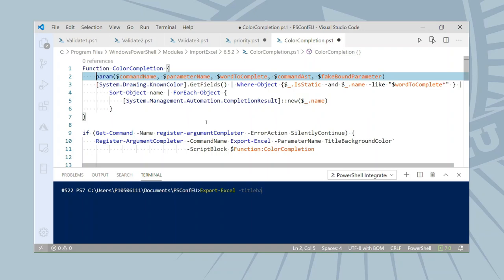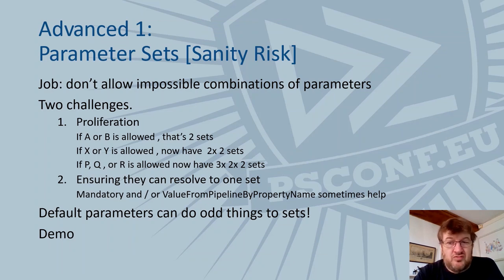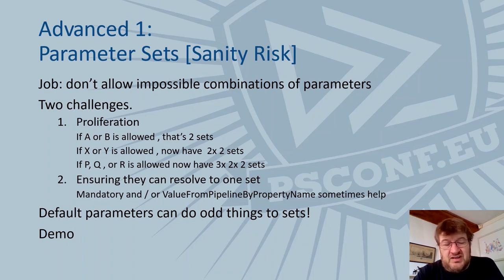Register-ArgumentCompleter has been around since PowerShell 4 — in PowerShell 3 it was a downloadable option. To maintain backwards compatibility we only do the registration if Register-ArgumentCompleter is on the system, so this will work all the way back to PowerShell 3. Normally you'd just use Register-ArgumentCompleter without wrapping it in an if-block. There is a bit more to say on completers, but now I'm moving on to topics that shade from intermediate into more advanced territory — and the first of those is parameter sets.